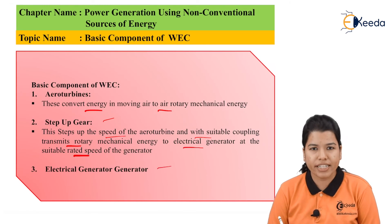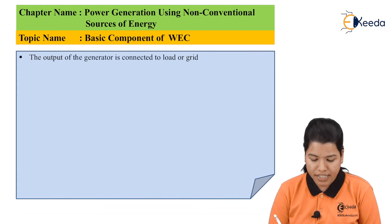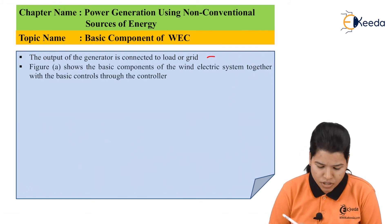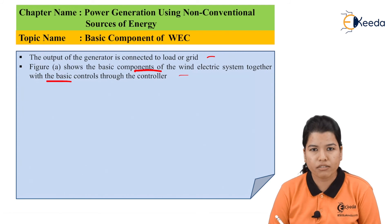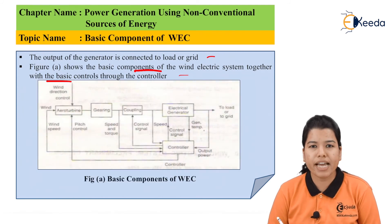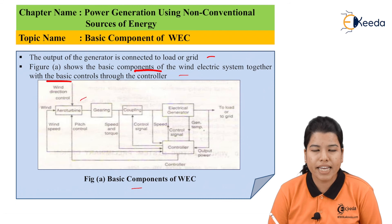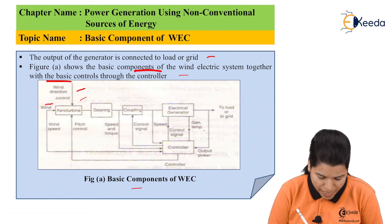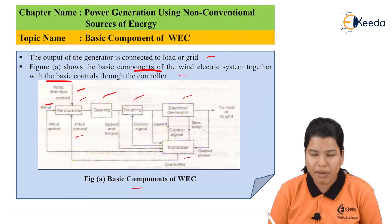The output of the electrical generator can be directly coupled to either the load or the grid system. Figure A shows the basic components of the wind electrical system together with the basic controls through the controller. Here we can see the diagram for the basic components of WEC. The first component is the aero turbine. There are three inputs for the aero turbine: first is from the wind direction control, then the available wind, and then we have the pitch control. The other elements are the gearing equipment, the coupling equipment, and the electric generator. All these are controlled by the various controllers.